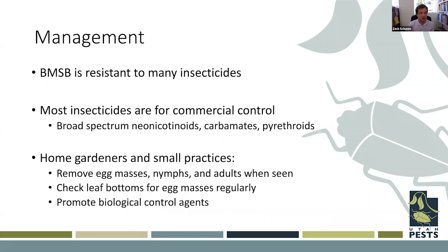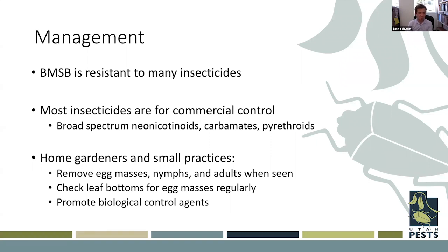Regarding management, BMSB is resistant to many insecticides. Commercial control requires broad-spectrum insecticides — neonicotinoids, carbamates, and pyrethroids — sprayed often and heavily, because BMSB can avoid many contact insecticides by inserting its proboscis directly into fruits. For home gardeners, since many of these products are for commercial use, the focus should be on scouting, removing egg masses, nymphs, and adults when seen, checking for egg masses regularly, and promoting biological control agents.